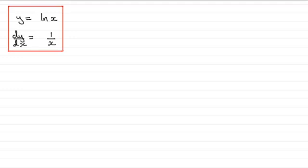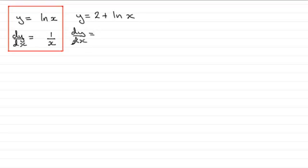Let's suppose that we had y equals 2 plus the natural log of x and we're asked to find dy/dx. According to the formula, if we differentiate the constant 2 that goes to 0, but we've got another term — natural log of x — and if we differentiate it we're just going to get 1 over x.